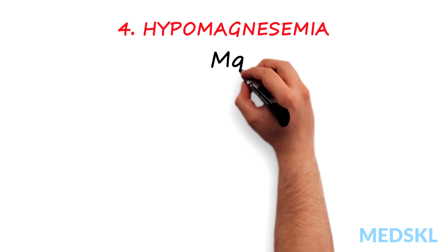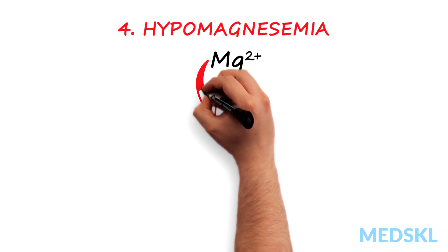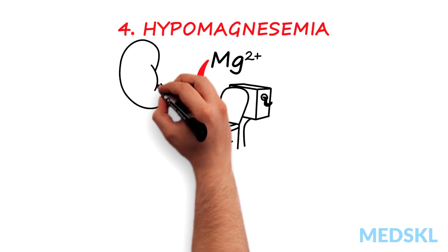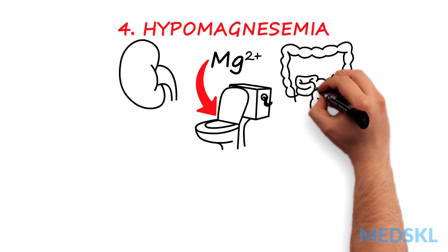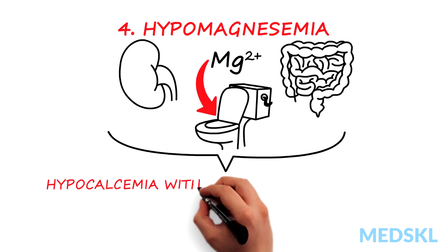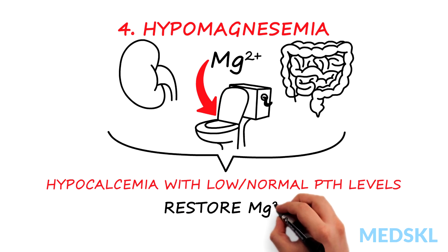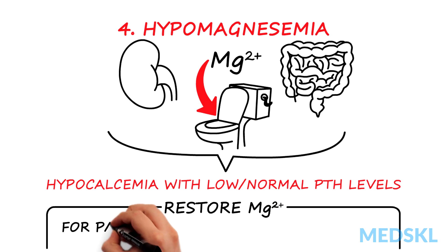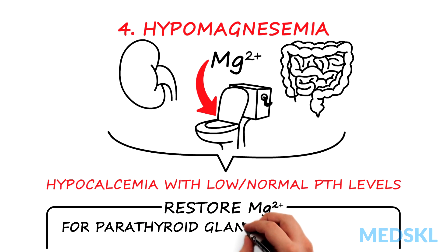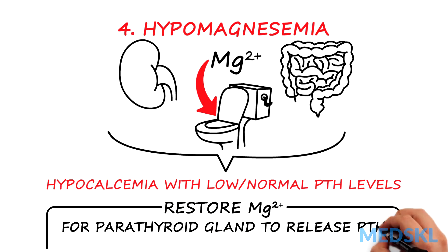Hypomagnesemia. Severely low magnesium levels as a result of renal or GI losses may result in hypocalcemia with low or normal PTH levels. One needs to restore magnesium to proper levels in order for the parathyroid glands to release PTH, thereby correcting the calcium levels.